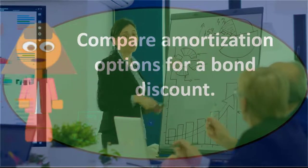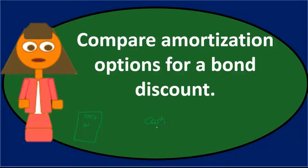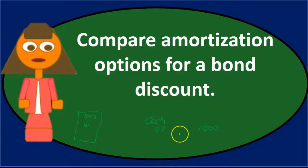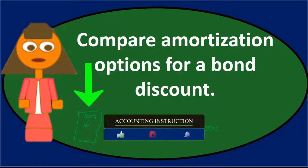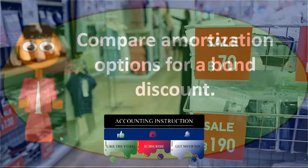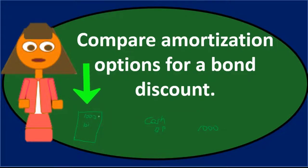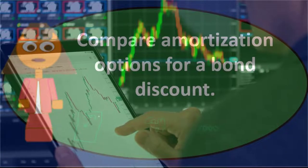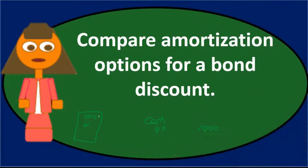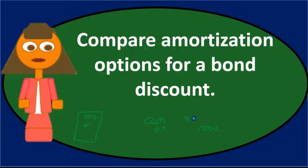When we issue the bond, we get cash, and we record a bond payable as a liability for a thousand dollars. Think of it like a sticker price: a discount means we received less than the face value — say, $900 instead of $1,000. A premium means we received more. So if we received $900, the $100 discount is a debit to keep the journal entry in balance.